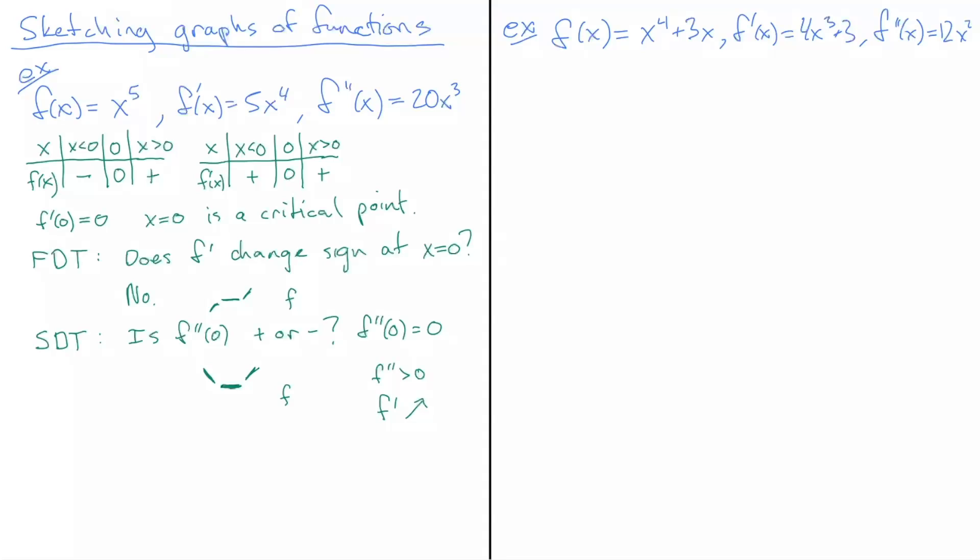If f'' were negative, we would have a positive slope decreasing to zero and then to a negative slope. We don't have that scenario either because f''(0) = 0. So in this case, because f'' equals zero, we actually don't know what's going to happen.